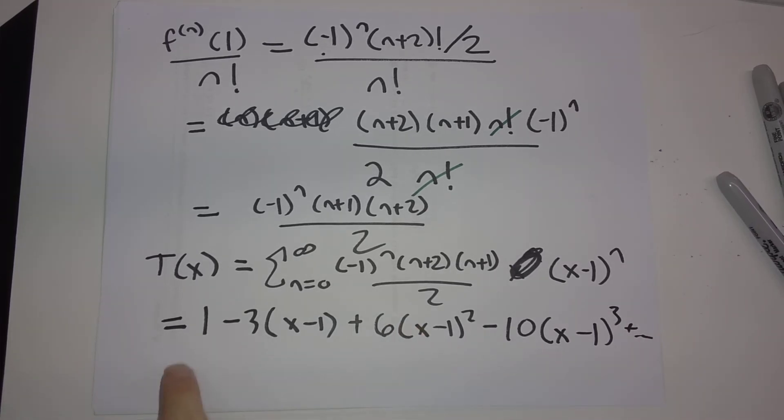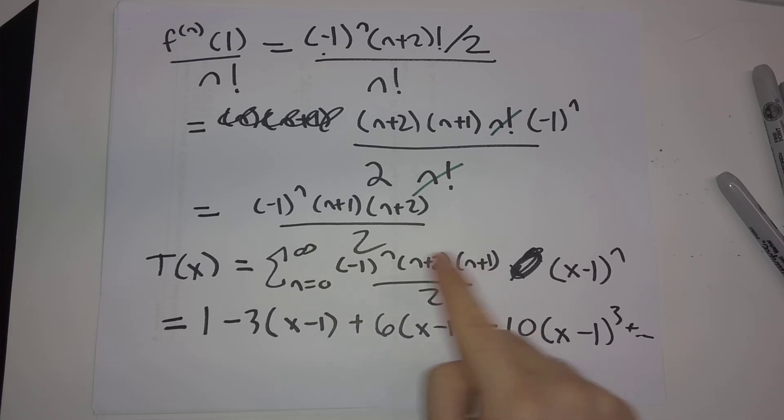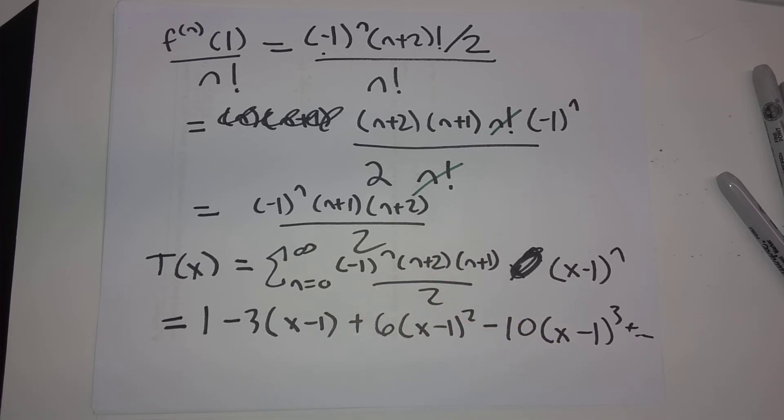So, note here that the coefficients are going plus, minus, plus, minus from that factor of minus 1 to the n. x minus 1 to the n, so x minus 1 to the 0, x minus 1 to the 1, x minus 1 squared, x minus 1 cubed. And if you plug in n is 0, 1, 2, 3, you're getting these coefficients here. So, for example, we plug in n is equal to 3 here. 3 plus 2 is 5, 3 plus 1 is 4, 5 times 4 is 20 divided by 2 is 10. Pick up that minus sign. Okay, so that is our first example of calculating out a Taylor series from scratch.